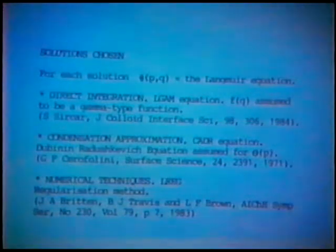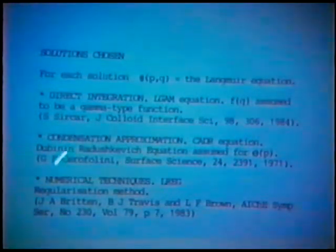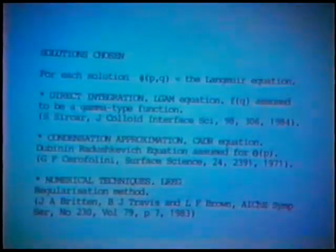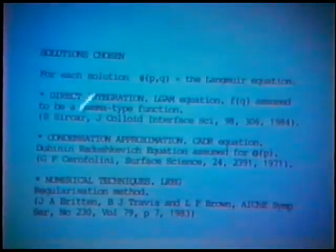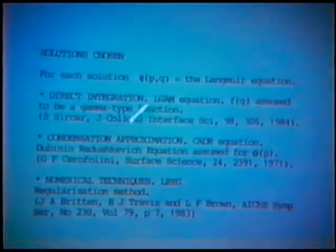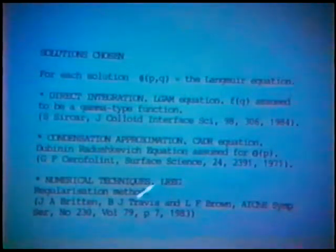For each solution, we've assumed that the local isotherm is the Langmuir equation. The direct integration method used is that proposed by Sarkar, where F(Q) was assumed to be a gamma-type function. For the condensation approximation, we've assumed that the overall isotherm follows the Dubinin-Radushkevich equation. And the numerical technique we've used is regularization. I've given acronyms to each: L-GAM for Langmuir-Gamma, CADR for condensation approximation Dubinin-Radushkevich, and L-REG for Langmuir equation regularization.